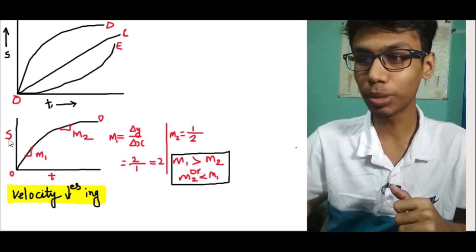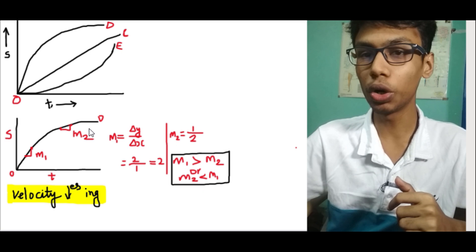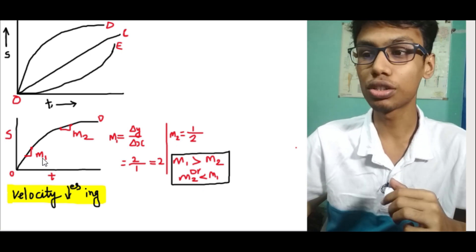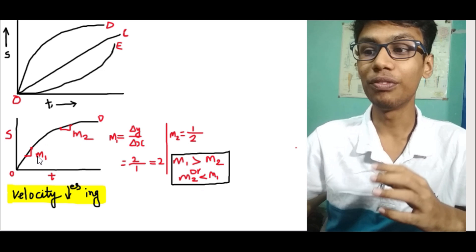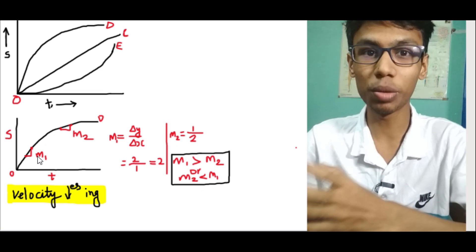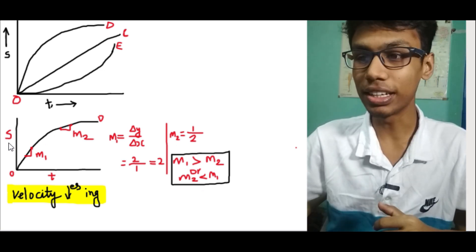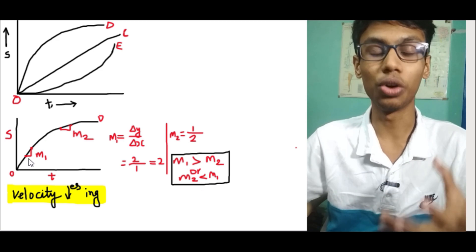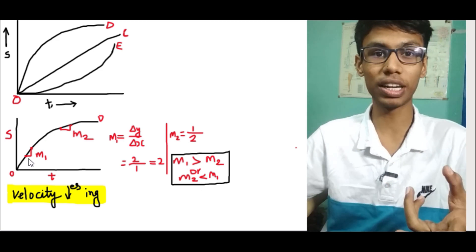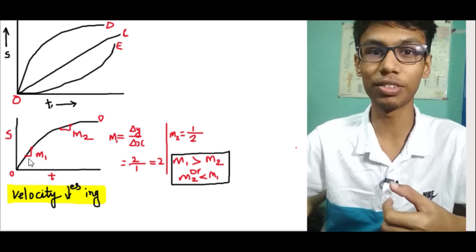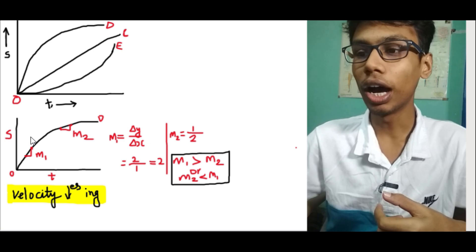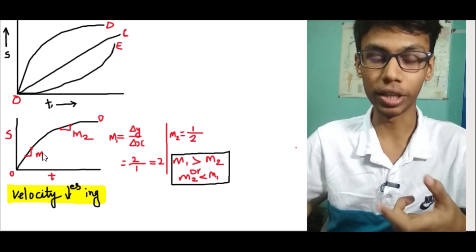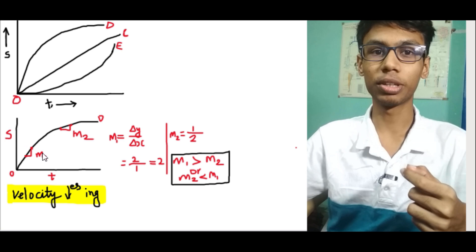In a displacement-time graph there is a parabolic curve. That means the slope goes on changing, and velocity goes on changing. In a displacement-time graph, the slope represents velocity. The formula is displacement divided by time taken, so displacement divided by time taken is the slope — and that is velocity.